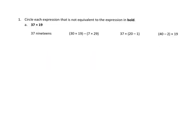For example, we have the problem 37 times 19, and there's a lot of ways that we can think of 37 times 19. One, we can think of it as 37 19s, as in 19 plus 19 plus 19 and so on.